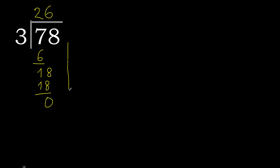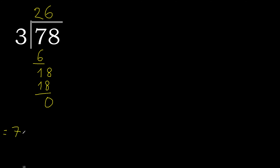There is no next number, and here the remainder is 0 — therefore, finish. 0 is the remainder. Therefore, 78 divided by 3 is 26.